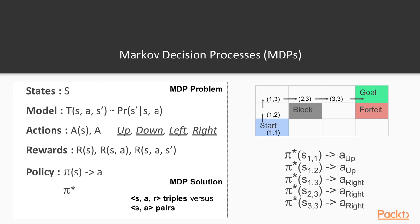A little more on what a policy is. You may remember that in our 3x4 grid world, we said that our optimal policy was up, up, right, right, right, if you were beginning from the start state. This isn't exactly what a policy is — this should be better described as a plan. This is a series of actions that we hope to take, given that we are starting out in the start state. What a policy prescribes is that for every state that you might be in, what is the action that you should take in that state?